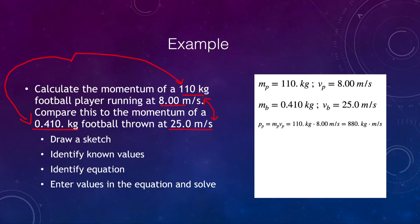Now we can calculate the momentum of the player. We multiply the mass times the velocity. We multiply the 110 kilograms by the 8 meters per second and get 880 kilogram meter per second. We can do the exact same thing with the ball. The momentum of the ball is given by the mass of the ball multiplied by its velocity and is 10 kilogram meters per second.